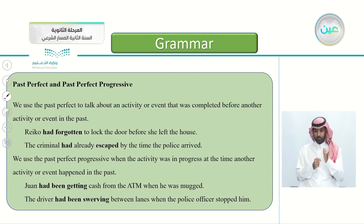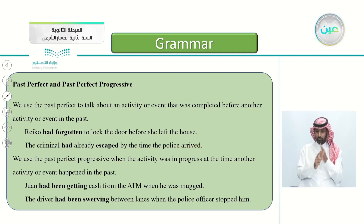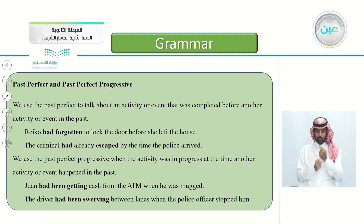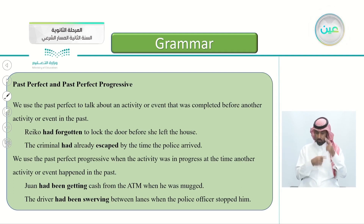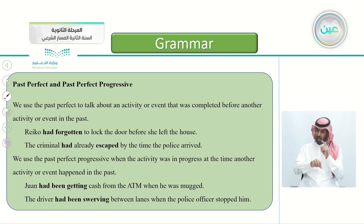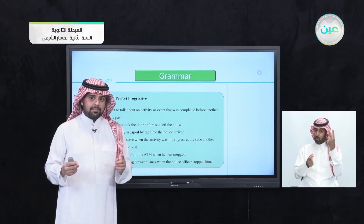Another example: 'The criminal had already escaped by the time the police arrived.' The second event uses the past simple. We use the past perfect progressive when an activity was in progress at the time another activity or event happened in the past. Unlike the past perfect where one happened after another, this time they both happened at the same time — they cross.